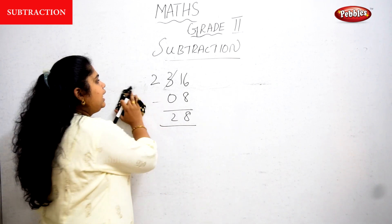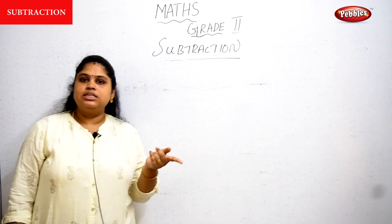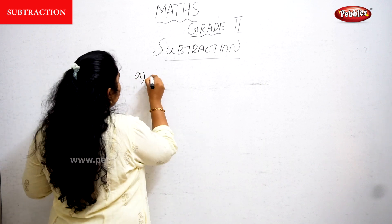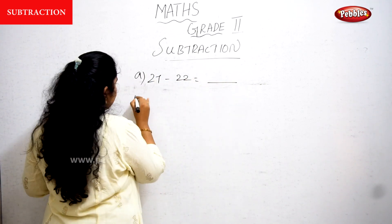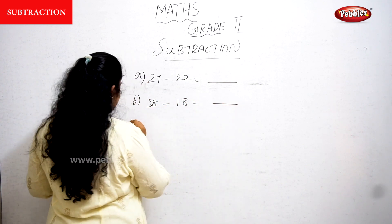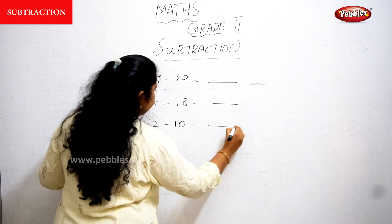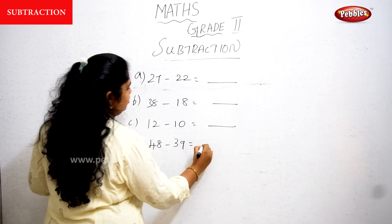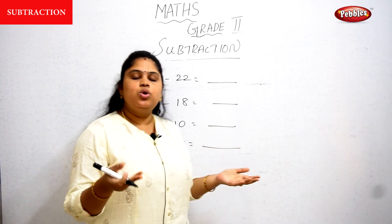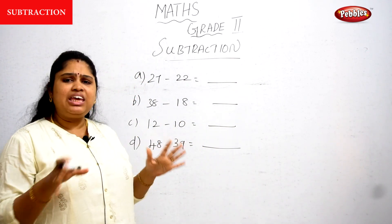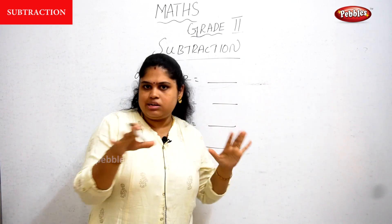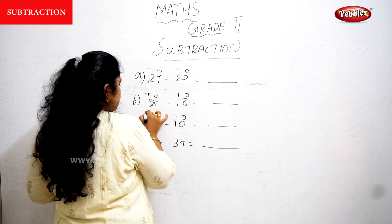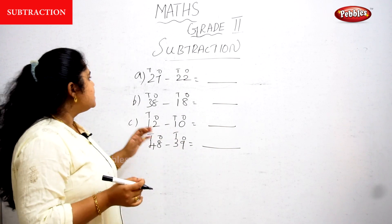If one number is two-digit and the other is single-digit, we use that method. But if both numbers are two-digit, how will we do the subtraction? Let's see: 27 minus 22, 38 minus 8, 12 minus 10, 48 minus 39. Here both numbers are two-digit. It's very easy — just write the ones and tens columns for each number, then subtract all the ones together and all the tens together.